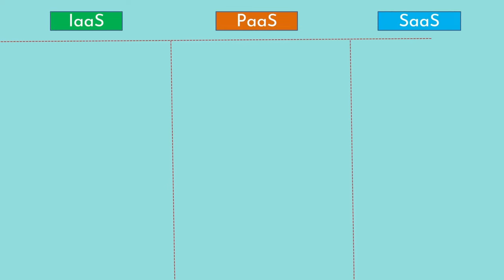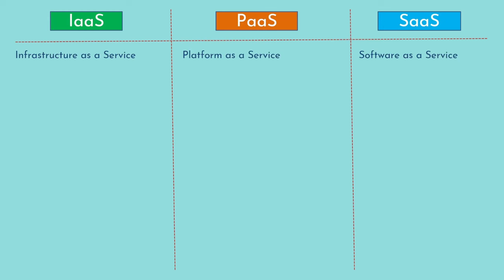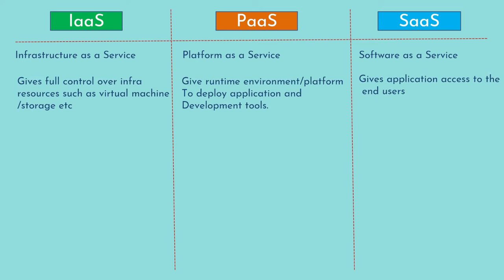Now let's talk about the difference between IaaS, PaaS, and SaaS. IaaS — Infrastructure as a Service — gives you full control over infrastructure resources such as virtual machines and storage. You can rent these resources from a cloud provider and configure them as needed. You install your own operating system, configure custom applications, and take care of all management and administrative tasks. You have full control over your operating system and infrastructure.